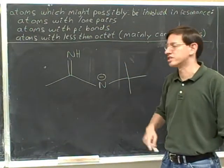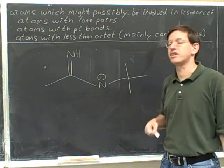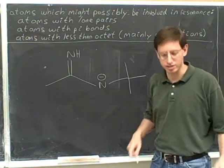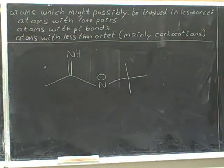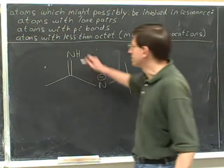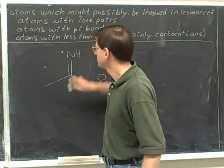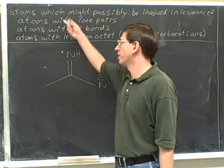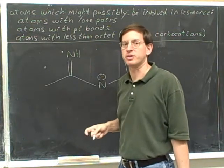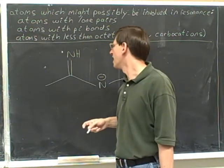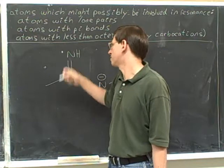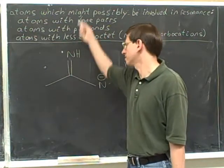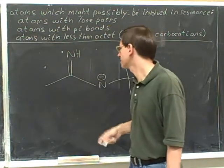Try this example. Remember our goal is to put a dot next to every atom that can participate in resonance. This nitrogen has a pi bond. It also has some lone pairs, but we only need to find one characteristic before we know that something can participate in resonance. So because of the pi bond we can say this can participate in resonance, or we might say that it falls into the list because of its lone pairs.